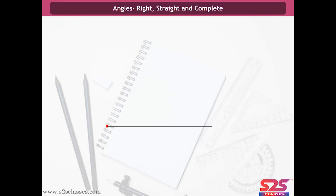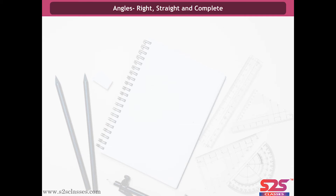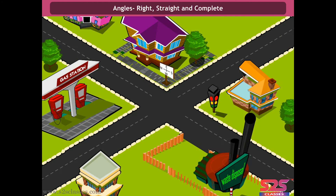Angles: Right, Straight and Complete. An angle is the figure formed by two rays, called the sides of the angle, having a common end point called the vertex. You must have heard terms such as 'take a right turn.' What do you mean by taking a right turn? Or particularly, a right angle.